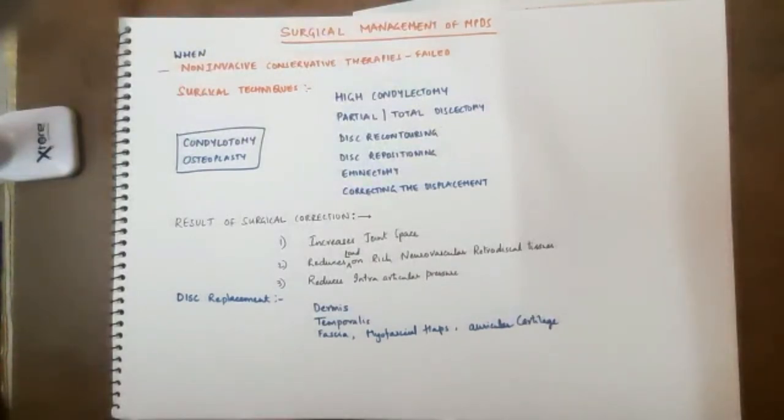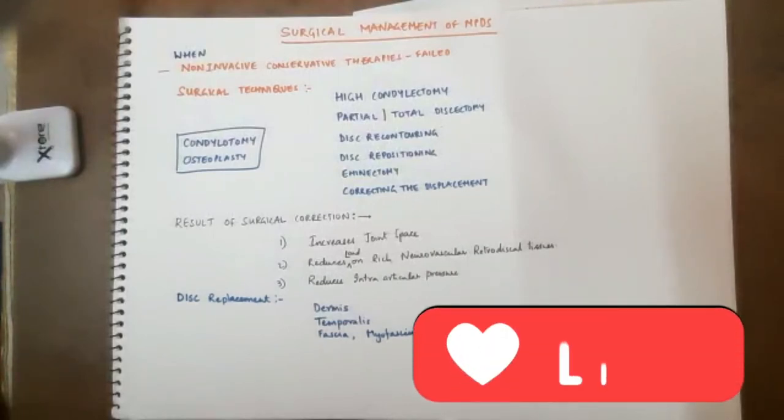So in that condition, how do you surgically manage MPDS is the question. Suppose a condyle is disturbed, or your eminence is disturbed, or it is constantly getting displaced, the condyle is constantly getting displaced, or if there is some pathology, adhesions within the joint space, or something, if you know the reason, then you have a chance to correct it.